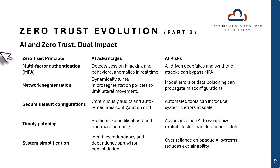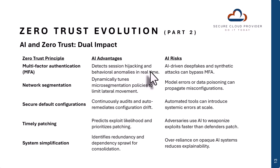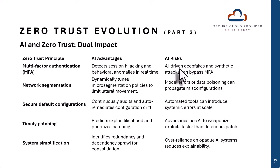On the next slide — part two of AI's dual impact on zero trust — the next item is multi-factor authentication, or MFA. AI can detect session hijacking and anomalies in real time. However, a very real risk is that AI-driven deepfakes and synthetic attacks can bypass MFA. For example, AI twins — if your MFA relies on some sort of biometric feature that AI can impersonate, such as voice, that's going to be a real problem.